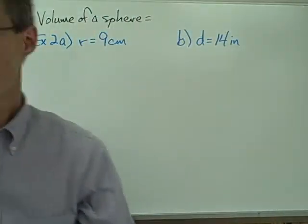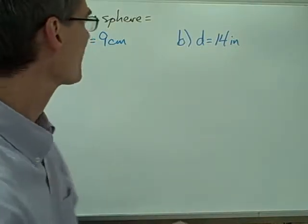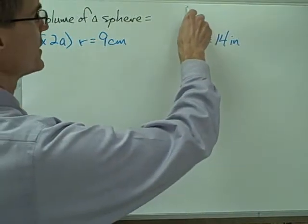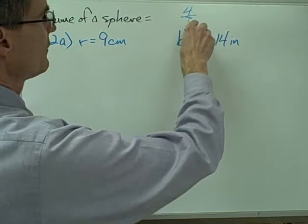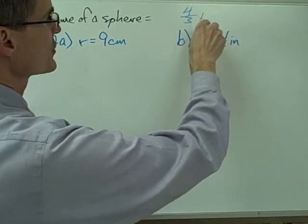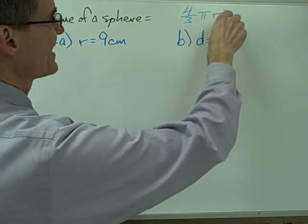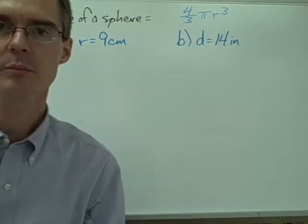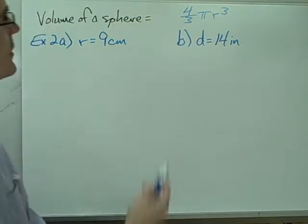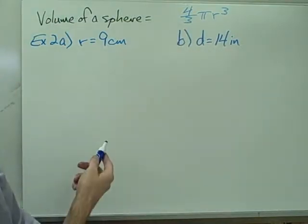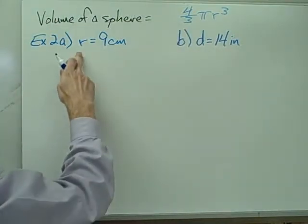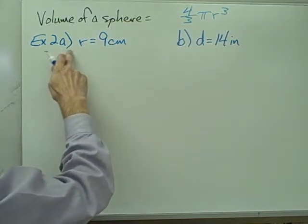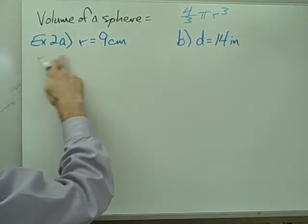The volume of a sphere — the formula for the volume of a sphere is 4 thirds times pi times the radius cubed. Let's look at how we use this formula for the same two spheres we had in the previous example.